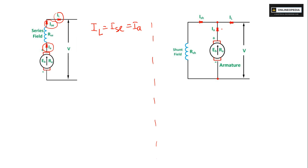But for shunt motor, if we apply KCL, you will get IL is equal to Ish plus Ia, because incoming current equals outgoing current — these two are outgoing and this is your incoming current.